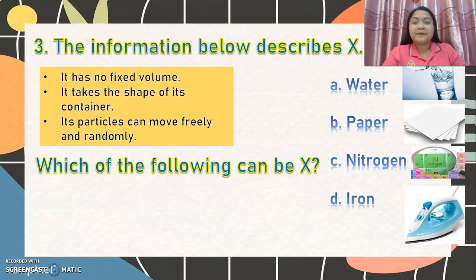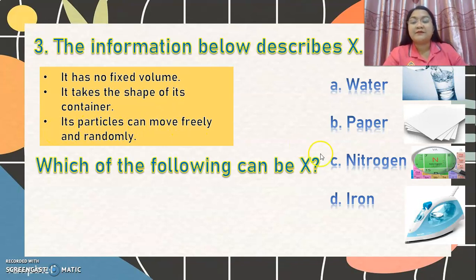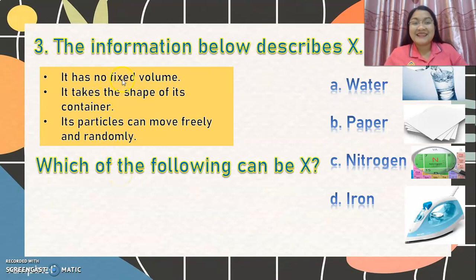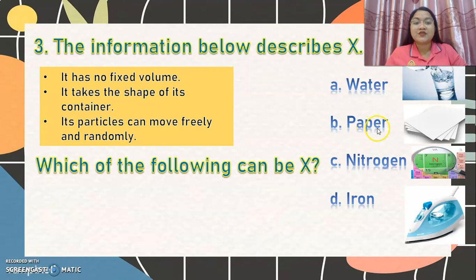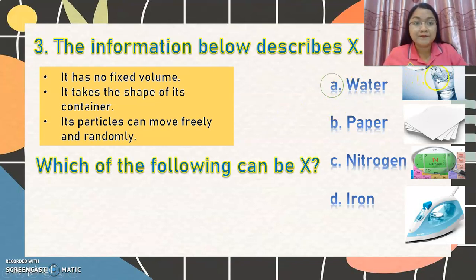Number 3: the information below describes X. Letter A, it has no fixed volume. Letter B, it takes the shape of its container. Letter C, its particles can move freely and randomly. Which of the following can be X? Letter A, water. Letter B, paper. Letter C, nitrogen. Or letter D, iron? The correct answer is letter A, water. Water has a fixed volume, but it takes the shape of its container and its particles can move freely. Very good.